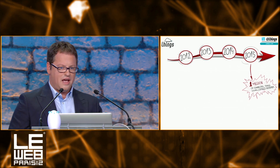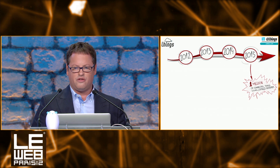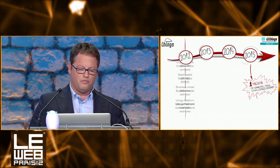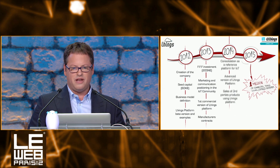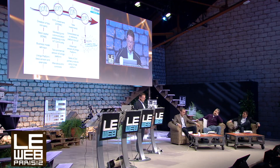We have the aim to have one million things connected to our platform in the next three or four years. For that, we will create a very strong roadmap, which includes investment, a very strong marketing and communication plan, and of course a very strong development plan for our platform. We already have our first beta version of the platform, and in the next two or three months we will launch our first commercial version of Linkos.